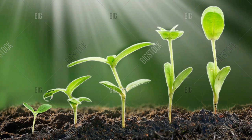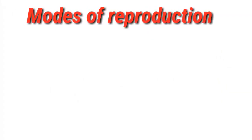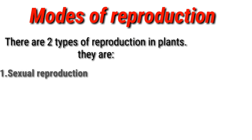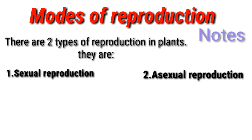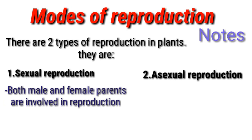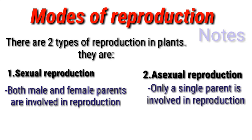There are two types of reproduction in plants. One is sexual reproduction, and the other is asexual reproduction. In sexual reproduction there are two parents. In asexual reproduction, it is the opposite — a single parent is involved.